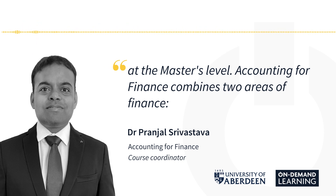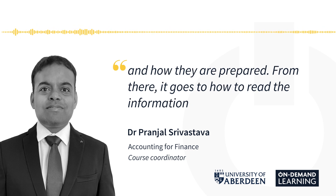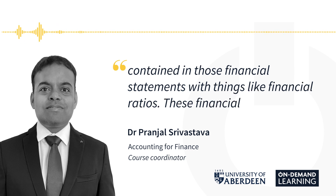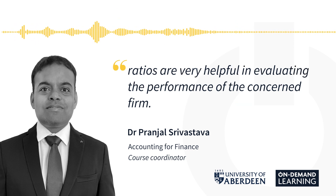Accounting for Finance combines two areas of finance. The first part looks at accounting, where it starts with what financial statements are and how they are prepared. From there it goes to how to read the information contained in those financial statements through things like financial ratios. These financial ratios are very helpful in evaluating the performance of the concerned firm.